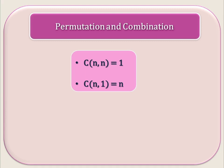C(n, 1) value is n. That means out of n objects we select only one object. There are n ways to select one object out of n objects. So C(n, 1) equals n — the total number of possibilities is n.